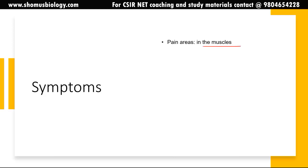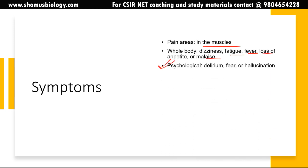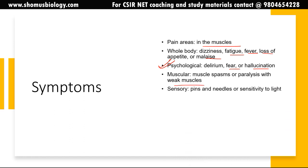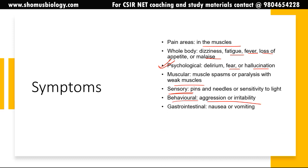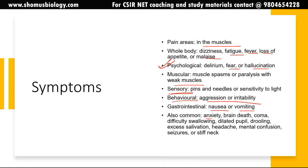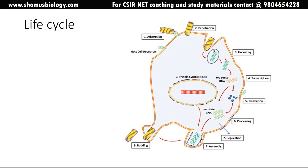Symptoms include pain in muscles throughout the body, dizziness, fatigue, fever, loss of appetite, and malaise. Psychological processes are also affected — fear and hallucinations can occur, which are specific to rabies infection. Muscle spasms and paralysis with weak muscles can also occur. Sensitivity to light, aggression, irritability, nausea, and vomiting may be present. Very common effects include anxiety, brain death, coma, difficulty swallowing, excessive salivation, headache, mental confusion, seizures, and stiff neck — all characteristic of rabies infection.